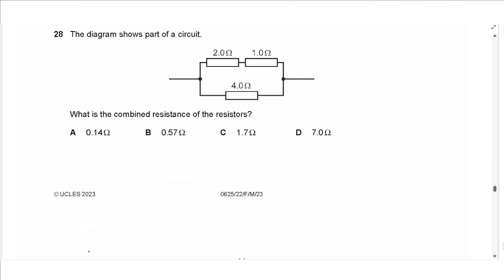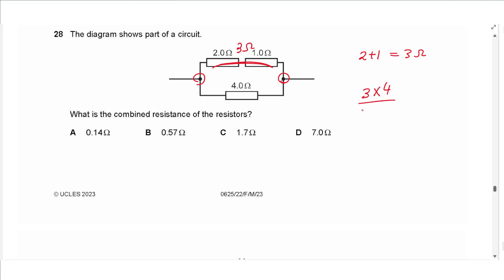Question 28: the circuit has resistors in a combination of series and parallel. The two series resistors give 2 + 1 = 3 Ω on the upper branch. Then 3 Ω in parallel with 4 Ω: (3 × 4) / (3 + 4) ≈ 1.7 Ω. The answer is C.